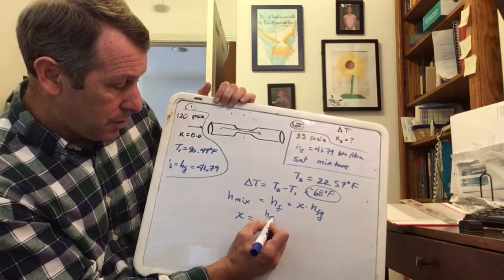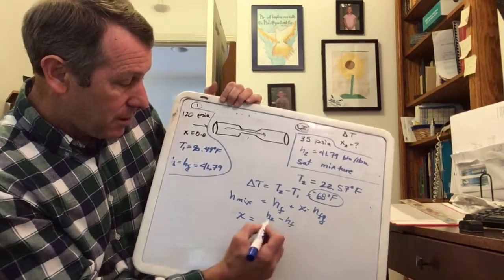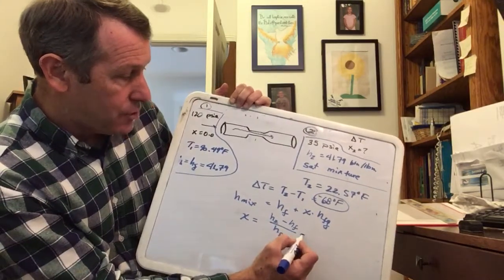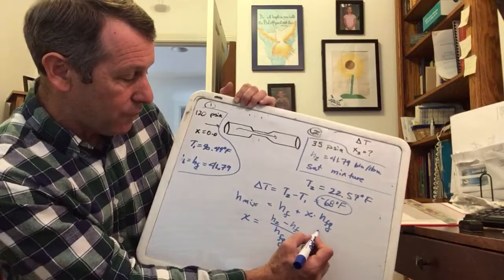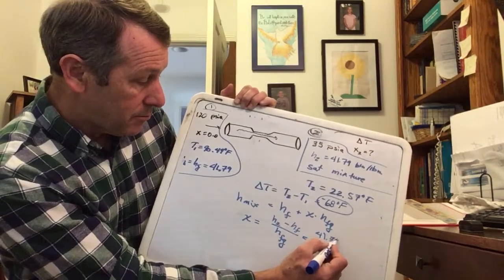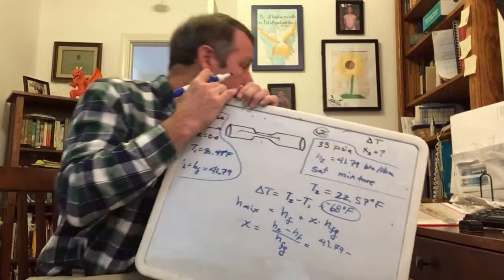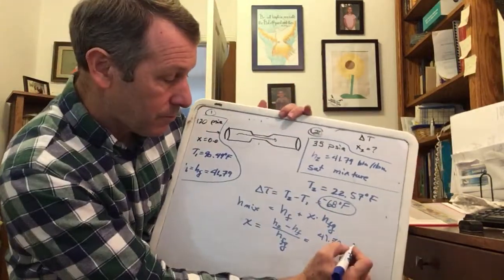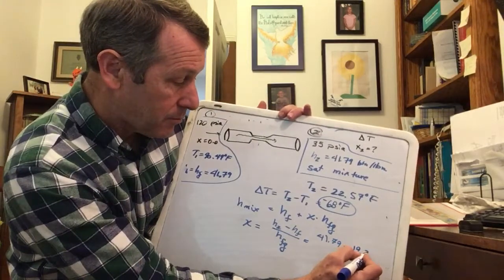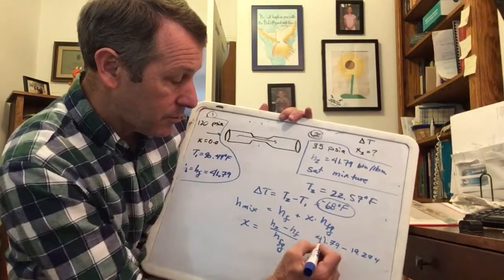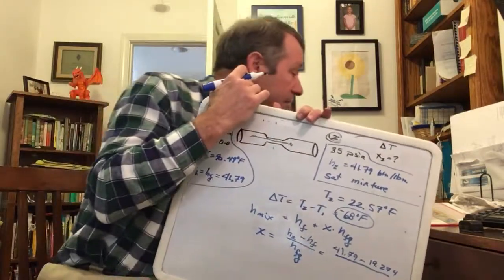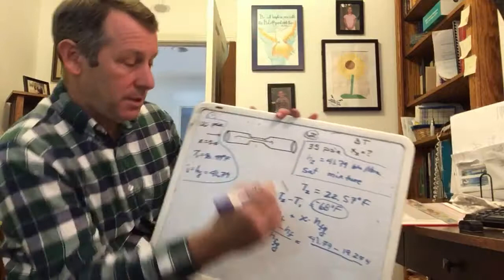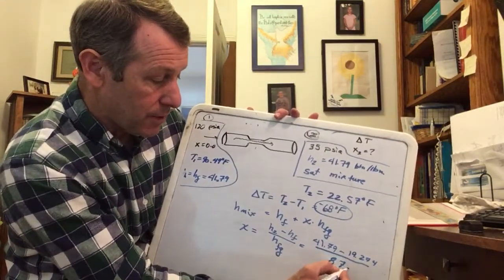h2 minus hf all over hfg. h2 is the same as h1, so that's 41.79. Give me a second to go to the tables. hf is 19.274, and the hfg value is 87.093.